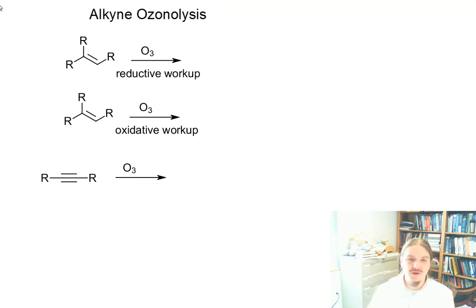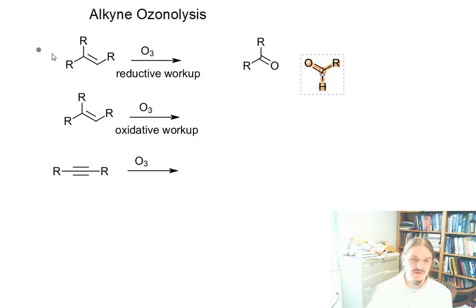To start off, I'm going to remind you of the ways that alkenes undergo ozonolysis. In fact, alkenes can undergo ozonolysis two different ways. One is following reductive workup where one possible outcome is aldehydes for alkenes where there is a hydrogen present on one of the carbons.